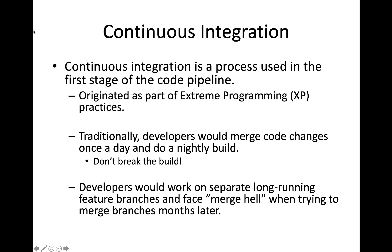When developers are making code changes, generally different teams would be working on separate long-running feature branches. And then when everybody was done working on their features after a couple months, they would try to merge all that code together into a single mainline branch in a single master build. And inevitably, they would encounter what we call merge hell when trying to merge all those code changes together months later.